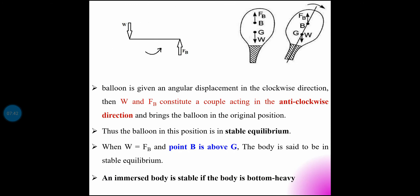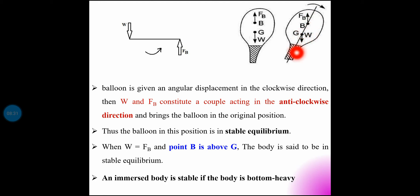When the balloon is given an angular displacement in the clockwise direction, W and FB constitute a couple acting in the anti-clockwise direction and bring the balloon back to its original position. Thus, the balloon in this position is in stable equilibrium. The force of buoyancy acts upward and W acts downward; they are equal and opposite forces separated by a distance, creating a moment — clockwise or counter-clockwise — as a couple.